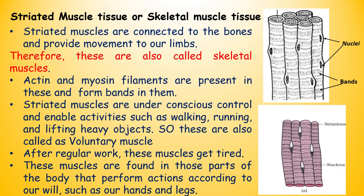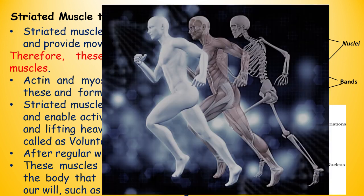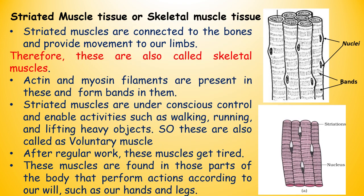Striated muscles are connected to the bones and provide movement to our limbs. Therefore, they are also called skeletal muscles. Actin and myosin filaments are present in these and form bands in them. Striated muscles are under conscious control and enable activities such as walking, running and lifting heavy objects. So, these are also called voluntary muscles.